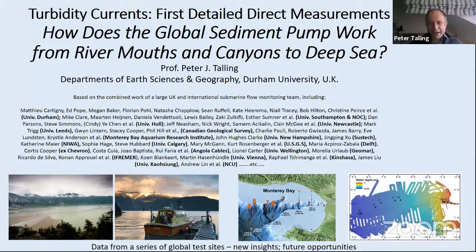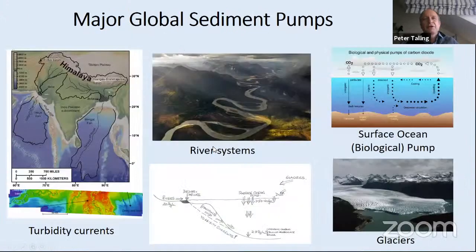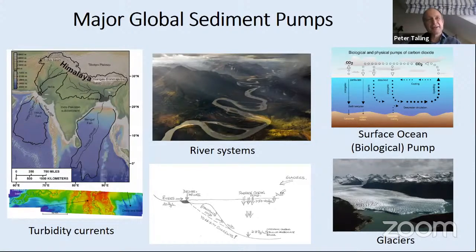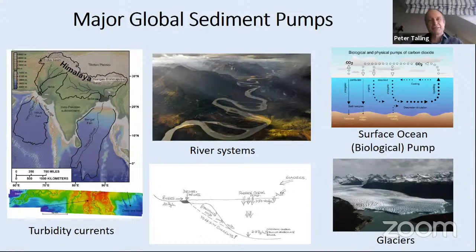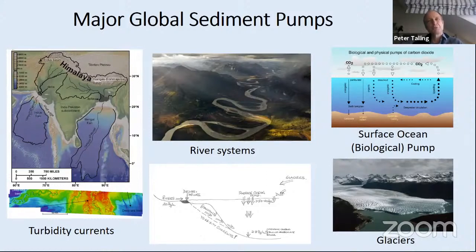If you zoomed out and looked at the planet, there are a series of major global sediment pumps. If you compare river systems to underwater turbidity current systems, in many cases the turbidity current systems are even larger. The Bengal submarine fan formed by turbidity currents goes beyond the tip of India and exceeds the scale of the Ganges-Brahmaputra river system. Similarly for the Indus fan. At the scale of individual events, just one of these underwater flows—the Grand Banks event in 1929—involved about 150 cubic kilometers of sediment, equivalent to all rivers in the world producing sediment for about 20 years.